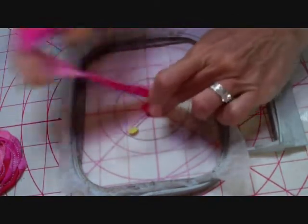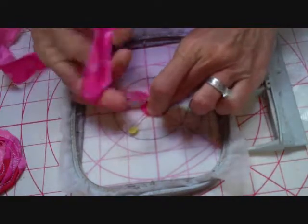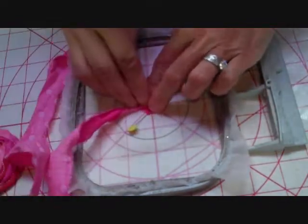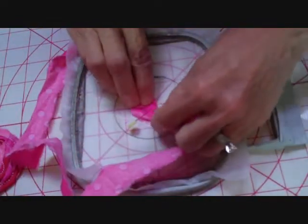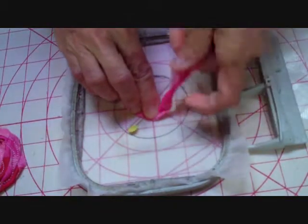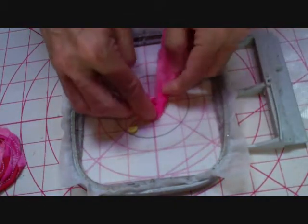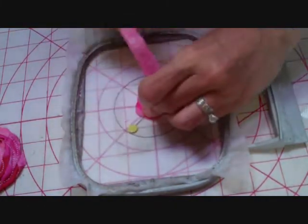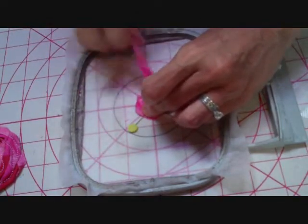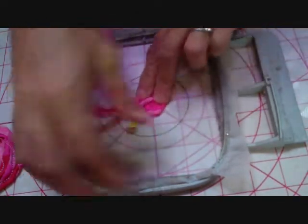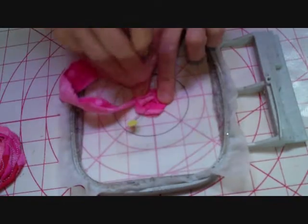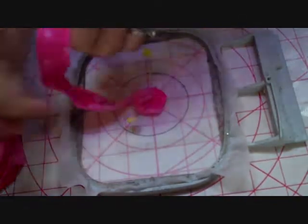Start to take the strip of fabric and twist it and turn it and bring it around. You're going to go in a circular motion. As you go around, push the strip down. Every so often, take a pin and pin it in place just to hold it while you're working with it.